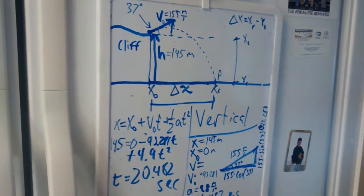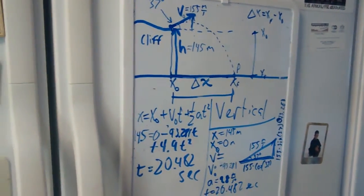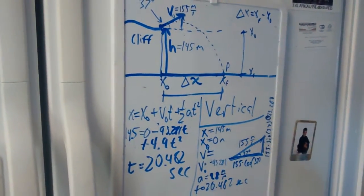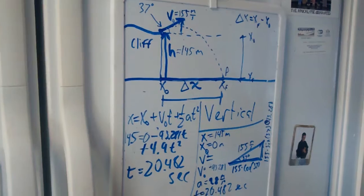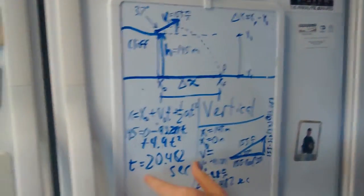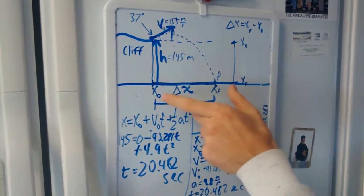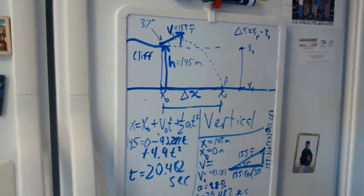To figure that out, we are going to use the time that we got from the vertical part of the problem. Remember, the vertical and horizontal components can be treated separately. We got the time. The time that it takes for the projectile to fall is the same horizontally and vertically. It's the same exact time.